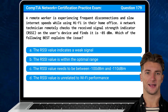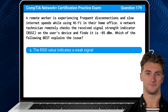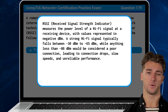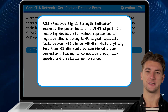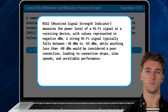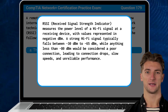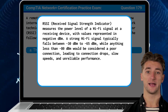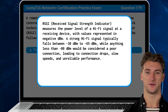The answer is A: the RSSI value indicates a weak signal. The RSSI, or received signal strength indicator, measures the power level of a Wi-Fi signal at a receiving device with values represented in negative decibel milliwatts. A strong Wi-Fi signal typically falls between negative 30 to negative 65 decibel milliwatts, while anything less than negative 80 decibel milliwatts is considered a poor connection, leading to connection drops, slow speeds, and unreliable performance.